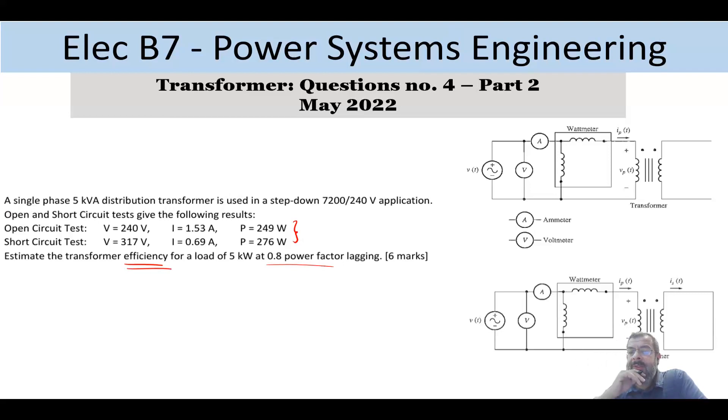I will put them in the video description. So the open circuit test, basically, we apply the rated voltage. Now this transformer is 7200 by 240 volt. So we apply the rated voltage. We can theoretically apply this voltage or that voltage while the other side is open circuit. Now because practically, it's easier to have a generator that can supply the low voltage than the high voltage, so usually in practical, this is how we do it. We apply the rated voltage of the low voltage side. And that is how the manufacturer does it, actually.